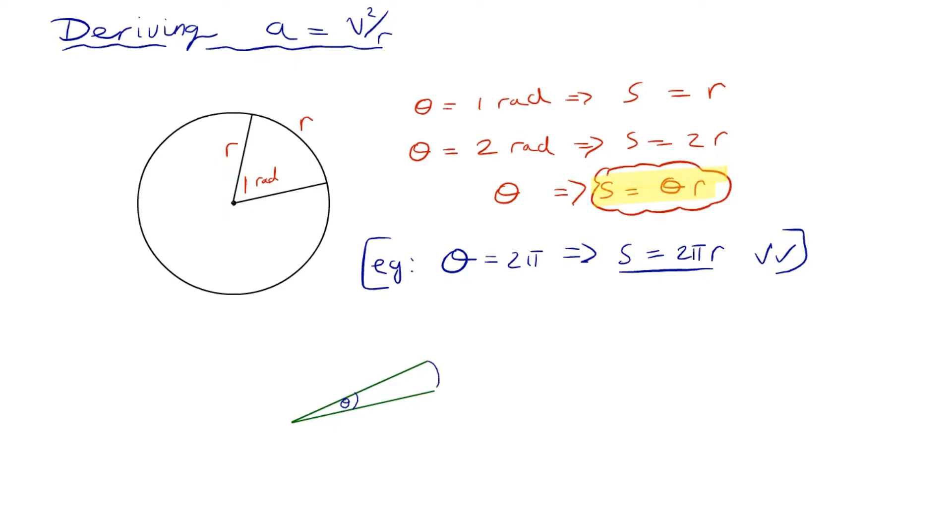then, well, it's obviously still true to say that the arc length is going to be theta r, or r theta. But because the angle's really small, what it means is that that's pretty close to this sort of straight line, direct distance between the two ends of the radii, which I'm going to call d.